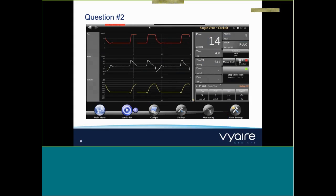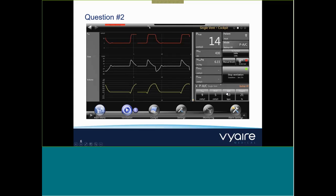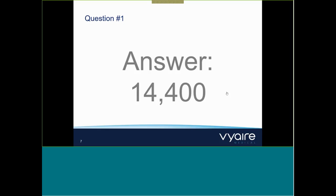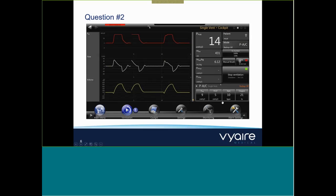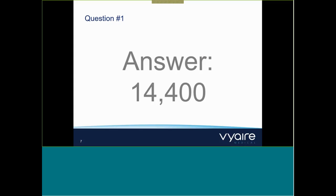Answers are coming in. Somebody is saying no injury, then we have five, and many times we have the answer of 14,400. The clue is there — the rate being set at 10. With a rate of 10, there are over 14,000 opportunities each day for the clinician to get the ventilation strategy right or potentially wrong for the patient in the ICU bed. So 10 breaths per minute, 60 minutes in an hour, 24 hours in a day — 10 times 60 times 24.